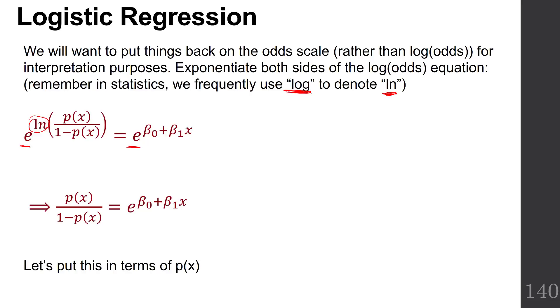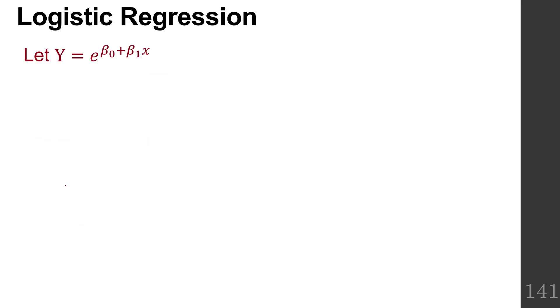But now, instead of putting this equation in terms of the odds, let's go one step further and see if we can solve for the probability. So we're going to work through this. To make things a little simpler, I'm going to substitute y equals e to the beta naught plus beta 1x.